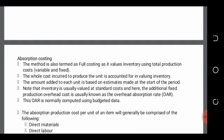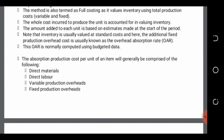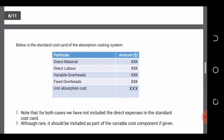The absorption costing system is also called a full costing system as it involves both variable and fixed cost components of a product. It includes all components of the marginal costing system but additionally includes fixed production overheads. Below is the standard cost card: direct materials, direct labor, variable overheads, fixed overheads — all on a per unit basis. Summing them gives the unit absorption cost.